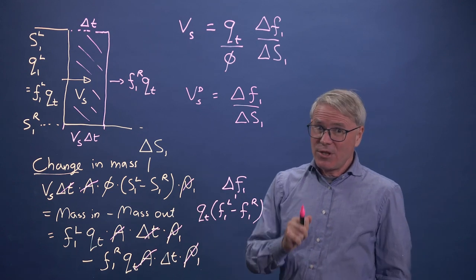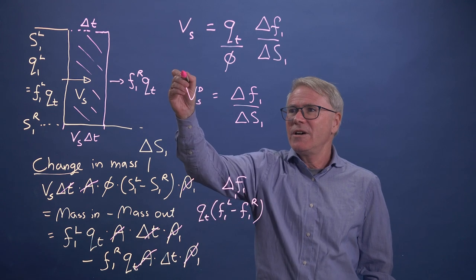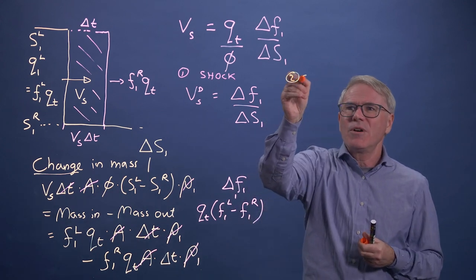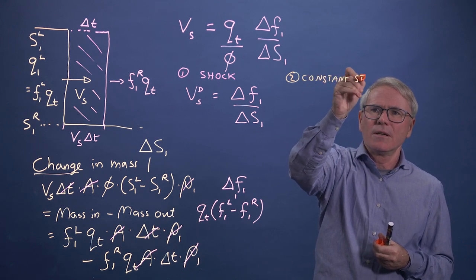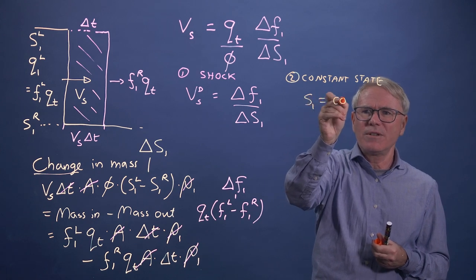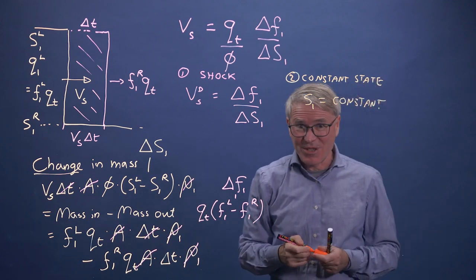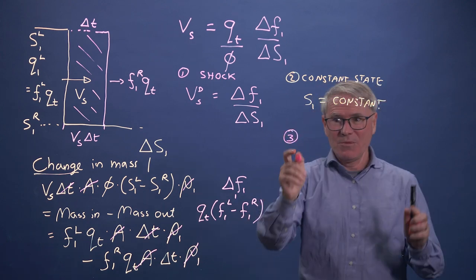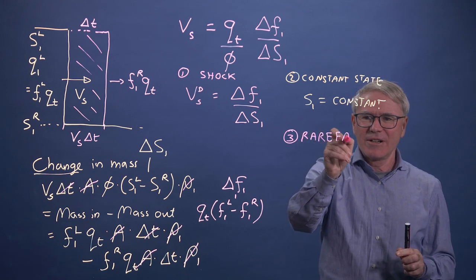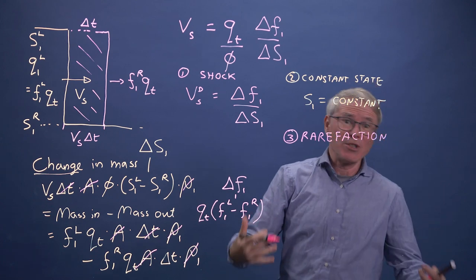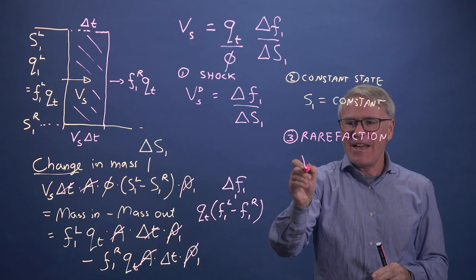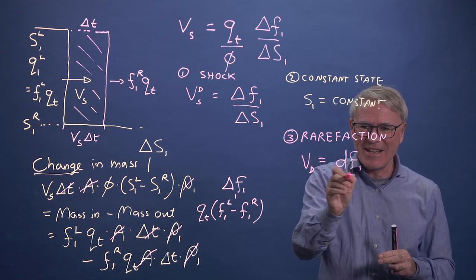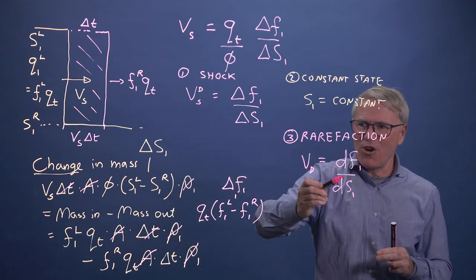So we're really looking now for a solution for multiphase flow that can be one of three things. So this is a shock. The second was what we call a constant state. And this was just S1 is a constant. And that actually is a totally legitimate solution. I know it's simple. And then the third one was what was derived in the previous video. And it comes with a rather strange, it's called a rarefaction, which is a smooth change in saturation. Not a shock, not nothing happening. And there the dimensionless speed. And don't worry whether or not D is a subscript or a superscript. That's not of any particular consequence. It's just the derivative.